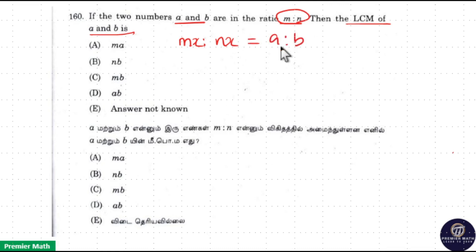That is, ratio of these two numbers are in the ratio M is to N. M is to N means Mx is to Nx. There must be a common factor between M and N. Now here LCM of two numbers A and B is